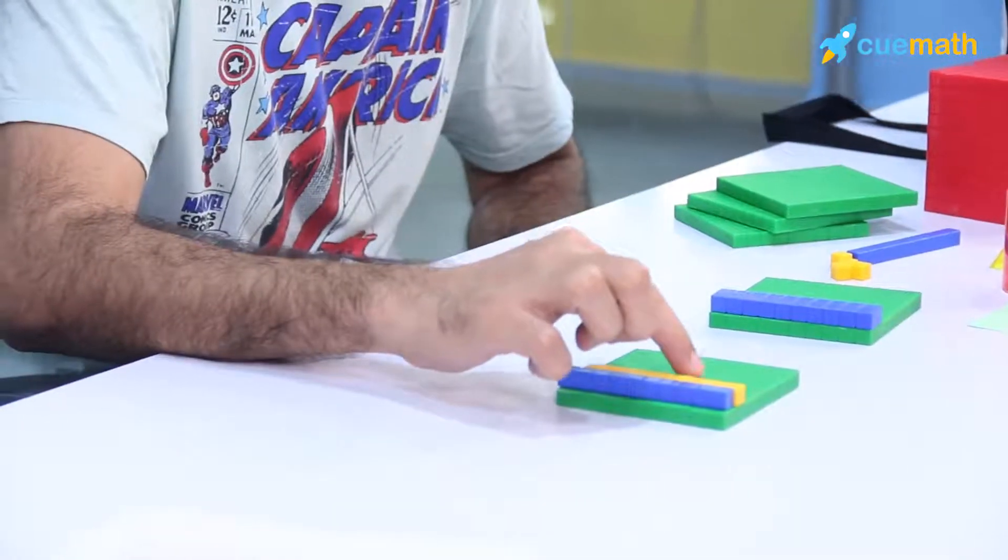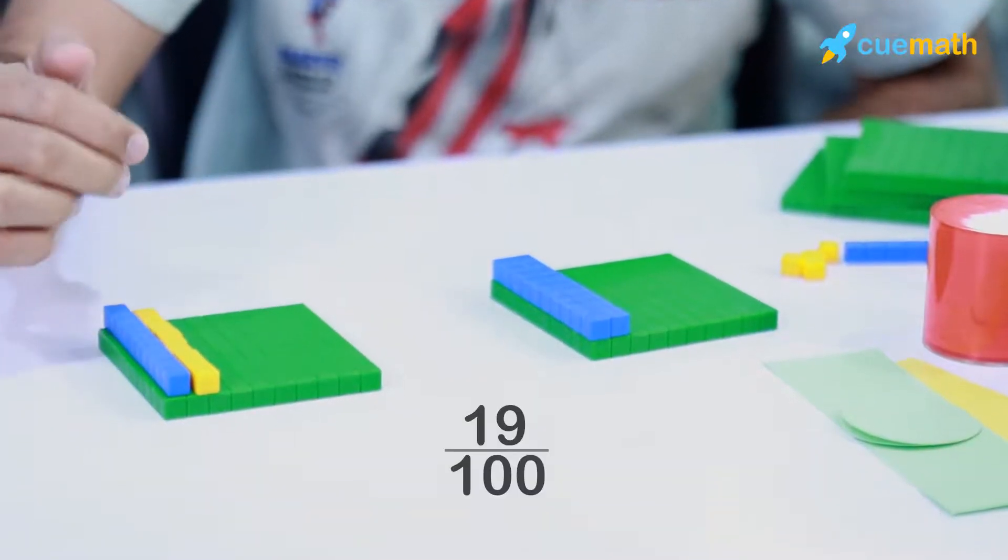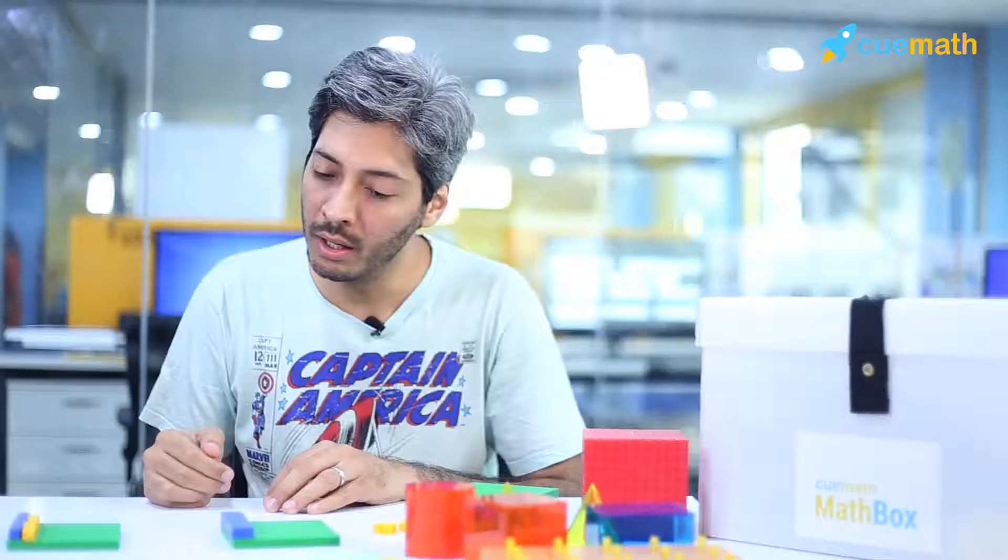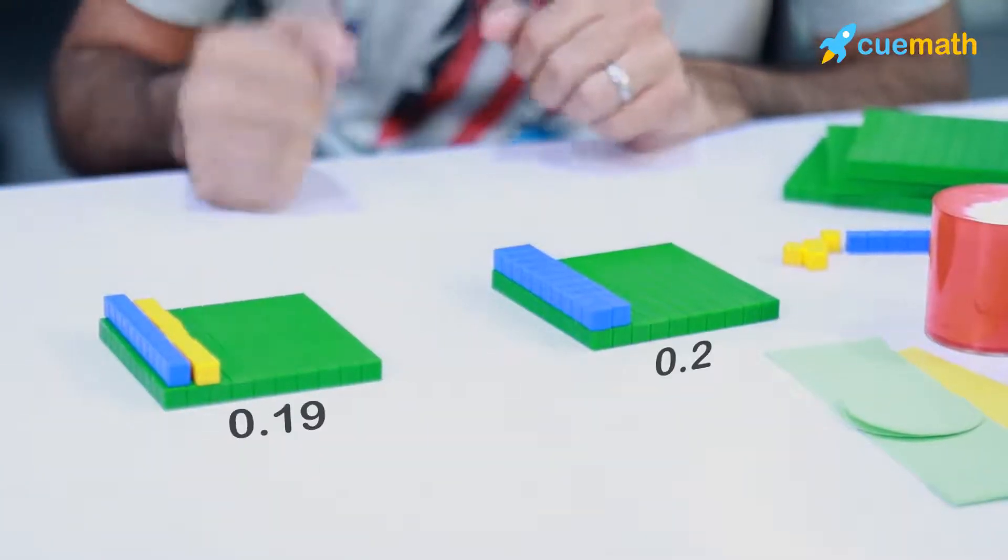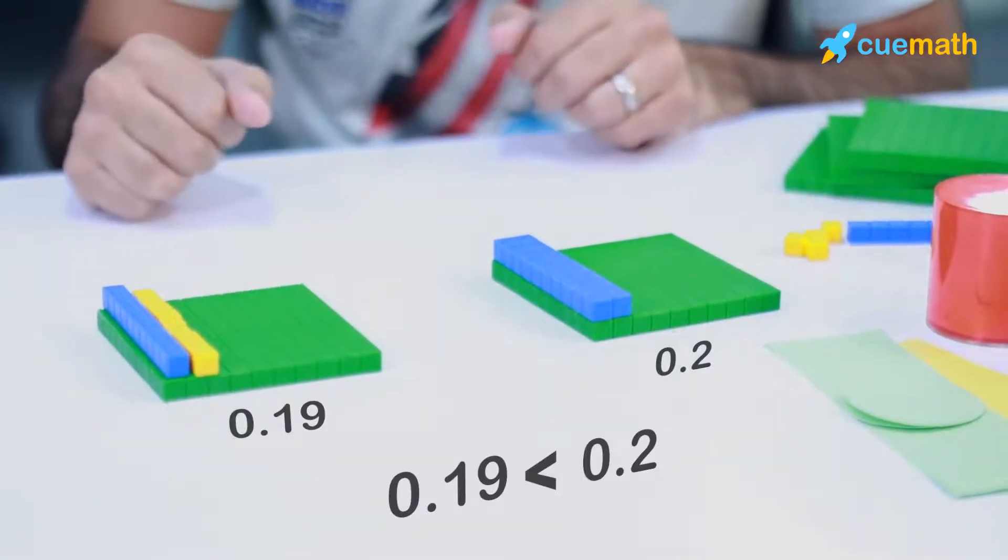So I have 19 blocks here on a total of 100, which gives me 19/100 or 0.19. Now visually, a child can clearly see that this is greater than this, right? So 0.2 is greater than 0.19, and they will never make that mistake again.